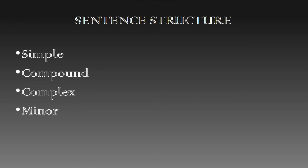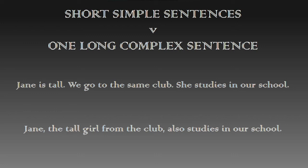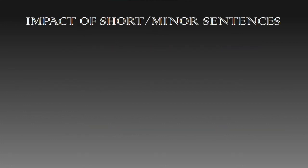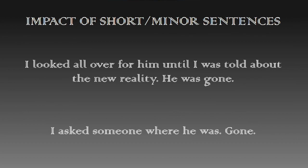Sentence structure. There are four main types: simple sentence, compound sentence, complex sentence, and minor sentence. These different structures are used to make the text more engaging — you would not want to read 'Jane is tall, we go to the same club, she studies in our school.' Instead, you would prefer one complex sentence: 'Jane, the tall girl from the club, also studies in our school.' Minor and short sentences may be used to bring dramatic effect, for example: 'I looked all over for him until I was told about the new reality. He was gone.'